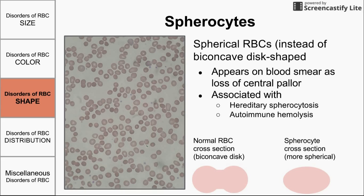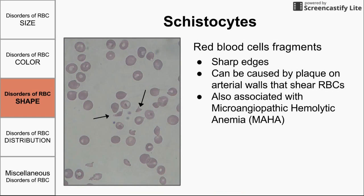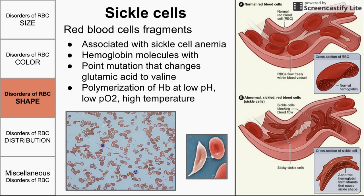Schistocytes are essentially red blood cell fragments — they look like the red blood cells were torn apart. This is kind of what happens: when a red blood cell passes an arterial wall that has a plaque on it, either a calcium or fatty plaque, the red blood cell can shear on the sharp edge. You see a fragment with sharp edges, as if torn apart. One disease associated with schistocyte formation is microangiopathic hemolytic anemia.